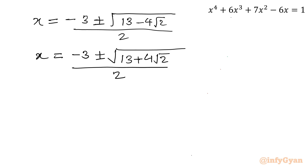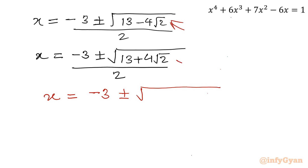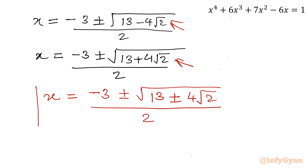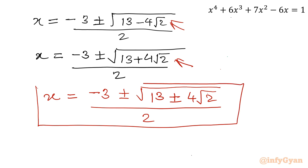Clubbing both equations, since the expressions under the roots are conjugate in form, we can write our answer in composite form as x = (-3 ± √(13 ± 4√2)) / 2. So the quartic equation has these four solutions, and all solutions are real.